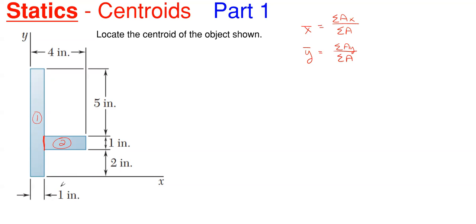The second step is to set an origin point — a coordinate system origin point. This one already has one set up with an X and Y coordinate system with the origin point at the bottom left corner. You want your dimensions off that origin point to be positive to the right, positive going upward, and negative to the left for X and negative going down for Y. So all my numbers for this object will be positive.